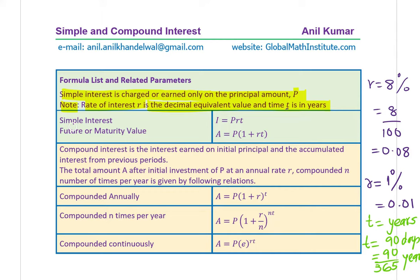The formula sheet gives all the formulas here. Simple interest is I equals P times R times T, where P is the principal amount, R is the rate of interest in decimals, and T is time in years. The future value or maturity value is the amount A, which equals principal plus P·R·T, simplified as P times the quantity 1 plus R·T.